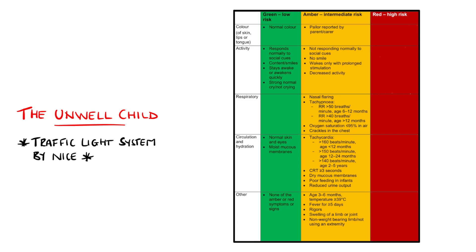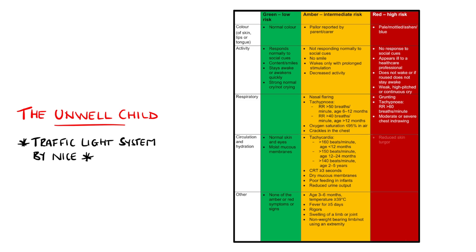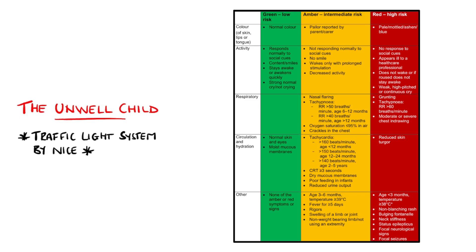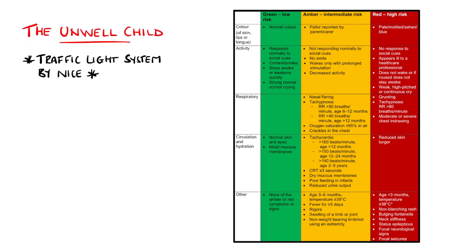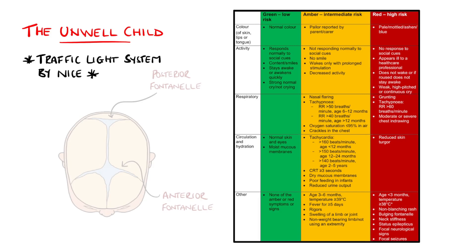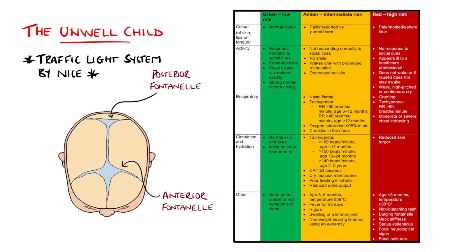The red or high-risk features include mottling or cyanosis, and lethargy or poor rousability with no response to social cues in colour and activity, while grunting or chest in-drawing are considered high-risk respiratory and circulation features. Other high-risk factors include a fever above 38 degrees with less than 3 months of age, a non-blanching rash or neck stiffness, focal seizures or neurological deficits, or a bulging fontanelle.